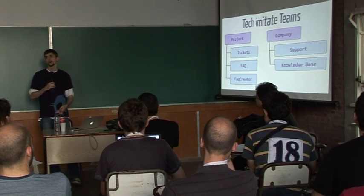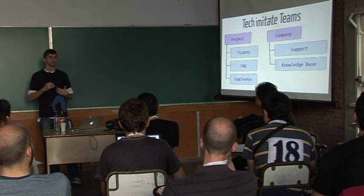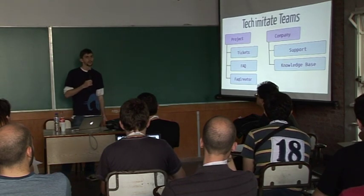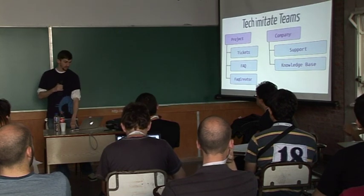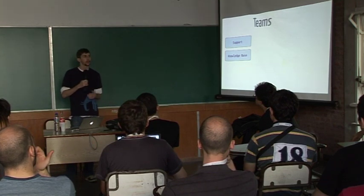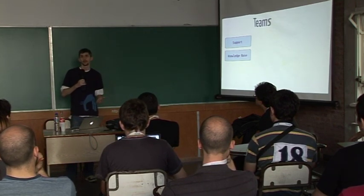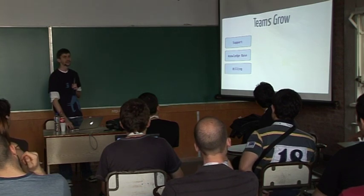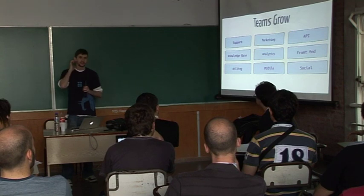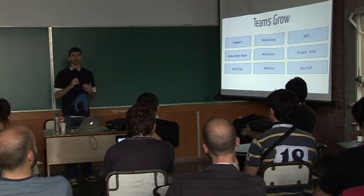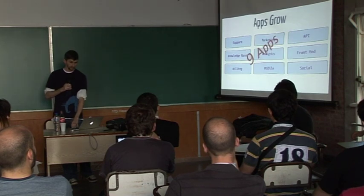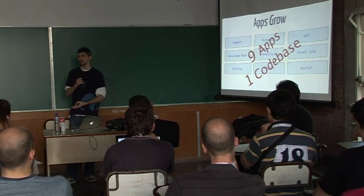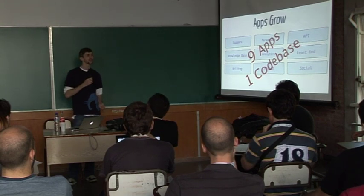First, why do we care? Why is it hard to maintain? We have Git, we have Mercurial, it's pretty easy to work with — it'll merge things together. But the big problem is this works great when you're two or three or four people, but your tech starts to imitate your teams. You start off with two small teams working on code, a small startup. Soon enough you're going to have a billing team, a marketing team, all these teams — and you're going to have nine apps that want to deploy together all in one codebase. This means you're going to deploy slower and be blocked by other people.